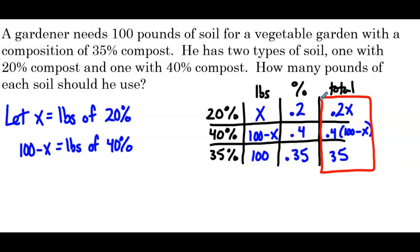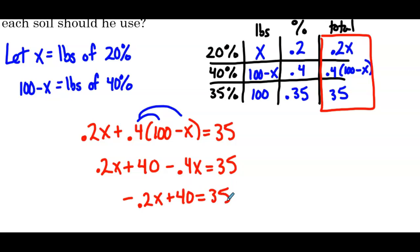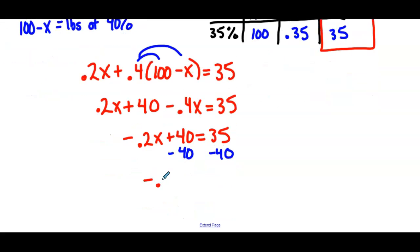So we can use this last column to set up our equation. So 0.2x plus 0.4 times 100 minus x equals 35. So distributing the 0.4, we have 0.2x plus 40 minus 0.4x equals 35. So we have negative 0.2x plus 40 equals 35. Subtracting 40 on both sides, we get negative 0.2x equals negative 5. Dividing both sides by negative 0.2.